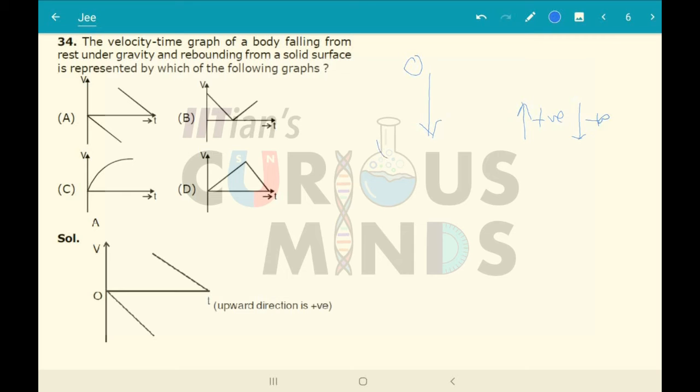But the velocity is increasing in the downward direction. When the velocity increases in the downward direction, it will be negative. For example, if it was 0,